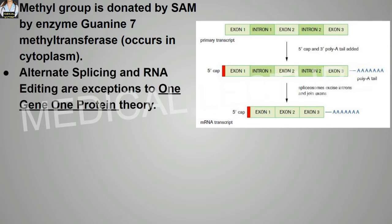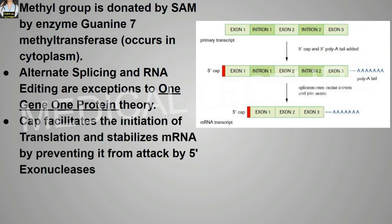Alternate splicing and RNA editing are exceptions to the one gene, one protein theory. The CAP facilitates initiation of translation and stabilizes mRNA by preventing attack by 5' exonuclease. By capping, addition of the polyadenylate tail, and splicing, the mRNA is considered mature mRNA.